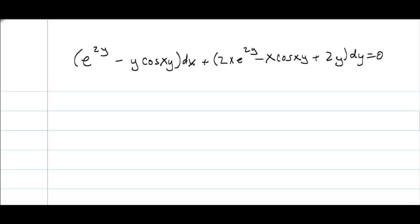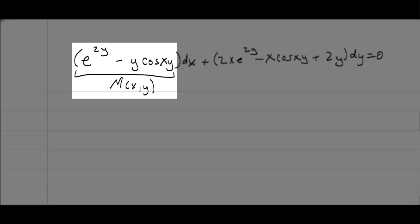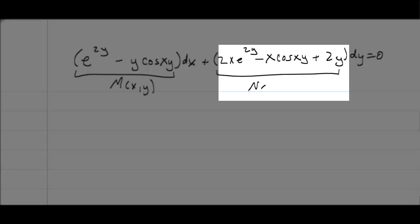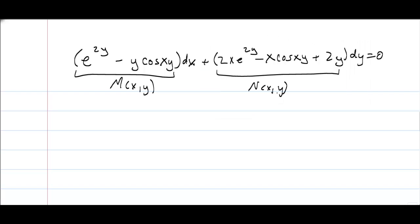This one looks much messier. It's not one I would want to try with separation of variables, and it's not one I'd use an integrating factor for, because for that we'd need a linear equation in a certain form. This looks like nothing we've been able to solve before. But if I can identify M(x,y) and N(x,y) and verify that the partial of M with respect to y equals the partial of N with respect to x, I'll be able to solve this pretty easily.